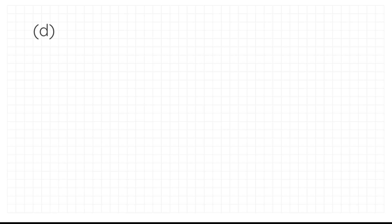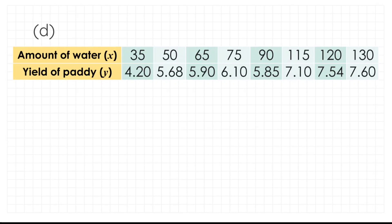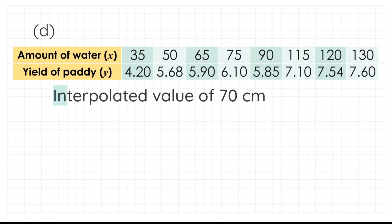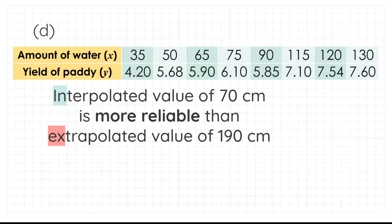The final question asks us to comment on the reliability of the results. Another word for reliability is validation. Looking at the data set, x equals 70 giving y equals 5.781 is within the range of the data, so this is an interpolated value. In contrast, x equals 190 giving y equals 9.501 is outside the range, making it an extrapolated value. Therefore, the interpolated value of 70 cm is more reliable than the extrapolated value of 190 cm.